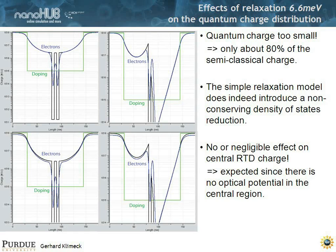Now we get to the real can of worms: if you include relaxation in the reservoirs, the Hamiltonian becomes non-Hermitian. It's not only becoming non-Hermitian, you also spread the density of states out in energy. And if you do that and don't completely conserve the density of states in this very simple scattering model, you effectively modify the density of states. The result is that in the very simple relaxation model, you only capture roughly 80% of the charge — you lose 20% of the charge. You would have to make that up by making the effective masses a little heavier, but we typically don't do that. You lose a little bit of charge since you made your eta energy dependent.